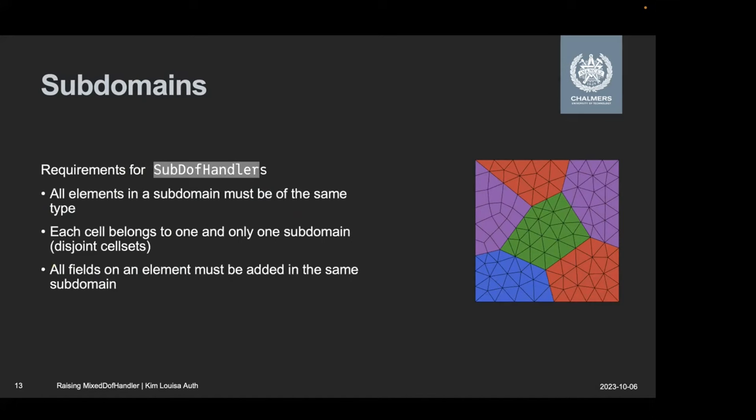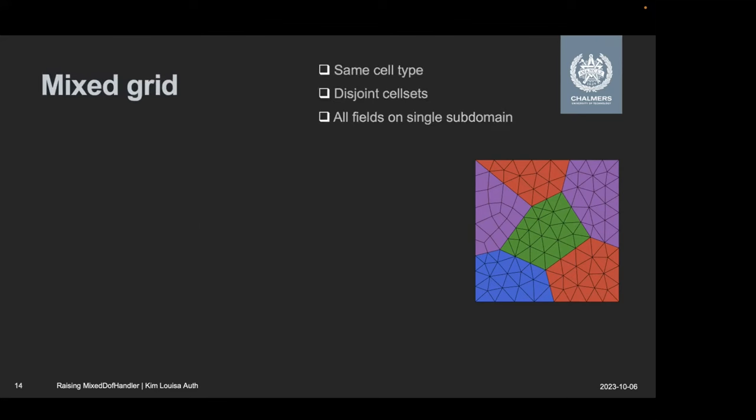And now I need to define my actual subdomains to say where do I want to use which definitions. And there are a couple of rules for defining subdomains. These have actually not changed ever since we started in 2019 with mixed DofHandlers. So all elements in a subdomain must be of the same type. And each cell can belong to one and only one subdomain. So we have to have disjoint cell sets between these different sub DofHandlers. And the third one actually follows from the second one. If I have several fields on an element, then I need to add all of them in the same subdomain. So let's keep that in mind.